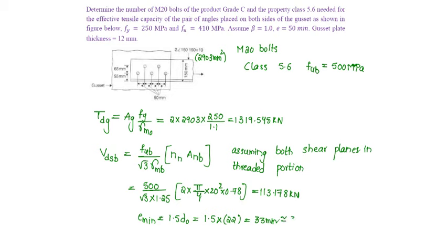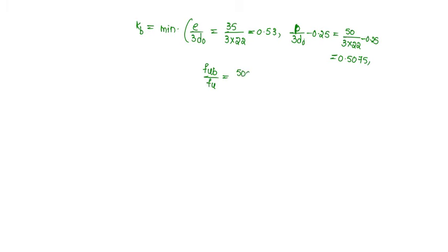So let us say it has 35 mm and pitch is given as 50 mm. The value of Kb will be equal to minimum of E by 3 D0, which is 35 by 3 times 22 equals 0.53, or P by 3 D0 minus 0.25, which is 50 by 3 times 22 minus 0.25 equals 0.5075, or FUB by FU which is 500 by 410 equals 1.219 or 1. So the minimum value is 0.5075.